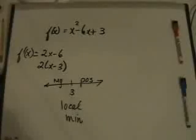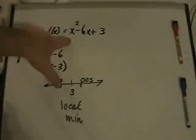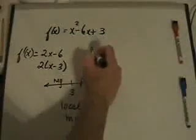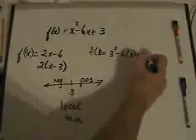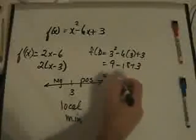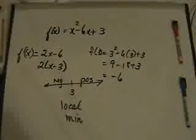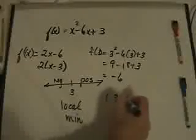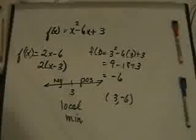What is the actual local minimum point? Take the critical value x = 3 and plug it back into the original function. f(3) = 3² - 6(3) + 3 = 9 - 18 + 3 = -6. So my local minimum point is (3, -6).